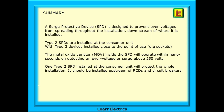A brief summary for this short introduction. A surge protective device, or SPD, is designed to prevent overvoltages from spreading throughout the installation downstream of where it is installed. Type 2 SPDs are installed at the consumer unit, with Type 3 devices installed close to the point of use, such as sockets. The metal oxide varistor, or MOV, inside the SPD will operate within nanoseconds on detecting an overvoltage above 250 volts. One Type 2 SPD installed at the consumer unit will protect the whole installation, and it should be installed upstream of RCDs and circuit breakers.